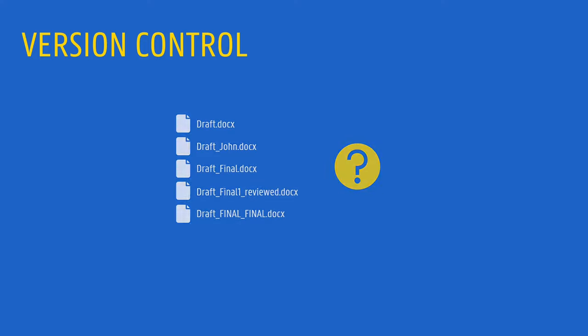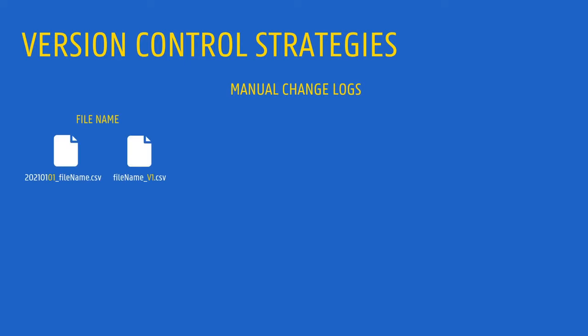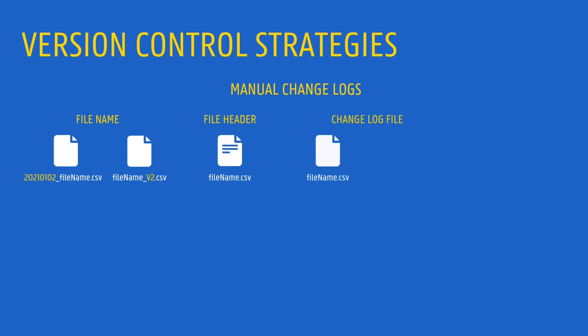There are two types of strategies to approach version control. In some cases, manual change logs will be sufficient. This can be done by incorporating the date or a version number in the file name. When more details about the changes between different versions have to be provided, you can create a manual change log in the file header or in a separate file. In written documents, a version control table can be a practical way to track the version history of the file.